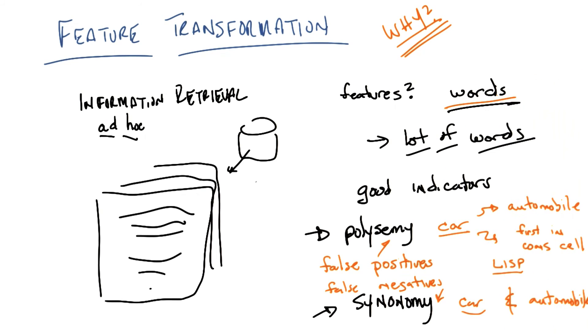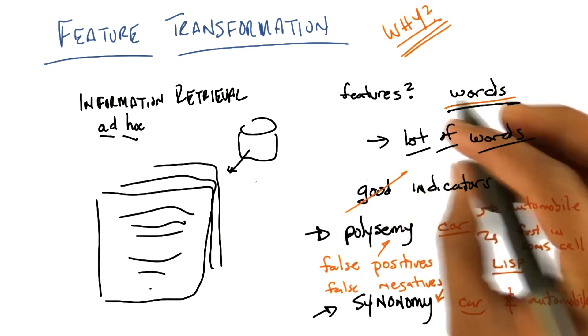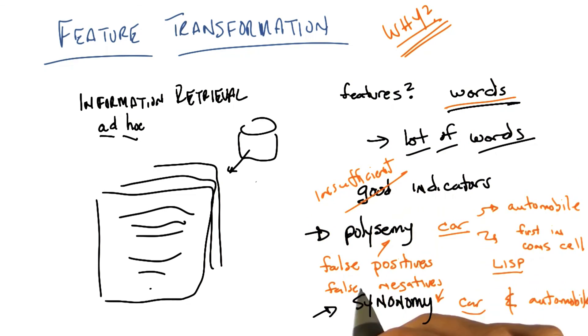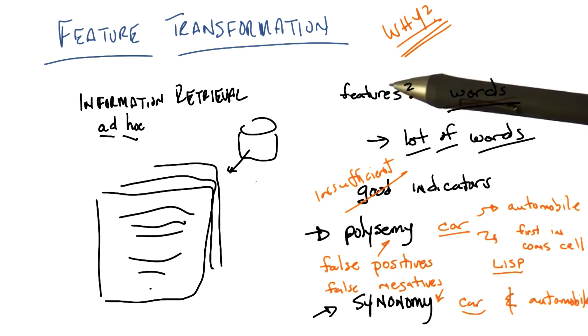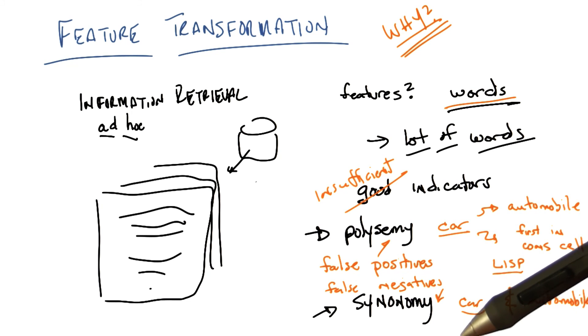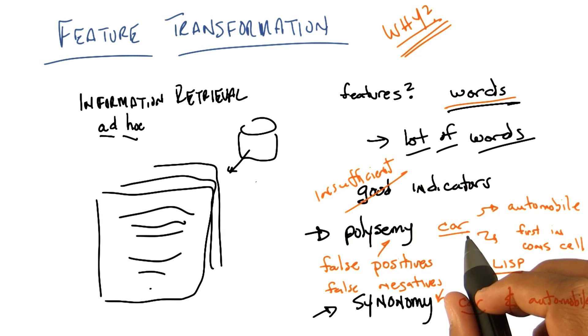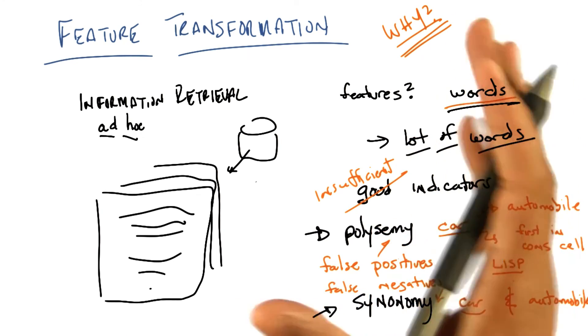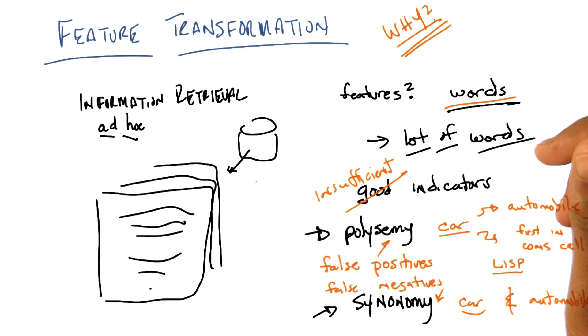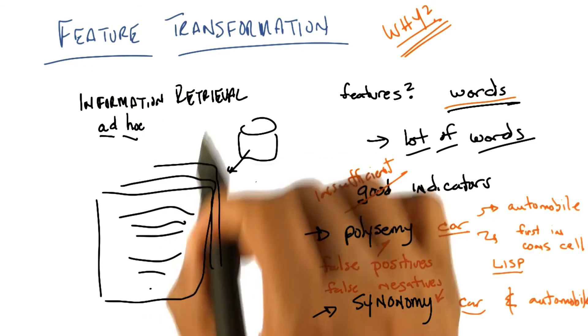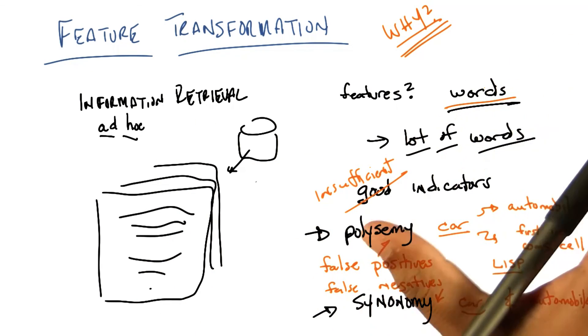So you can imagine that these sorts of problems come up all the time. You've got a set of features, in this case words, which have this problem that although they're good indicators, they're insufficient. That is, we have a set of features that will generate both false positives and false negatives on their own, and more to the point, doing feature selection will not solve this problem. I can throw away a bunch of irrelevant words and even useless words, but I'm still going to have this problem of generating false positives for polysemy and false negatives for synonymy. And this goes beyond simply information retrieval and text retrieval into any generic problem where you have possibly a large set of features that have this problem of false negatives and false positives.